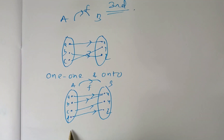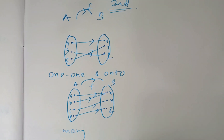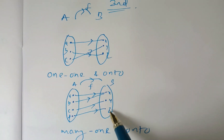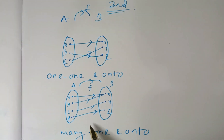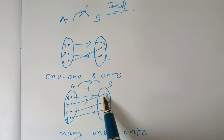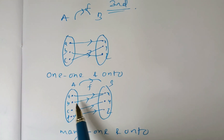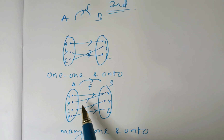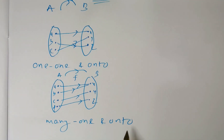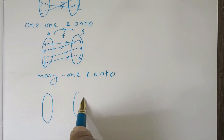Then what is the type of function here? This is many-one and onto. We call it onto because no point in set B is left behind, but many-one because both A and B are connected to X — in other words, the image X has two pre-images A and B. That's why this is not one-one but many-one and onto.